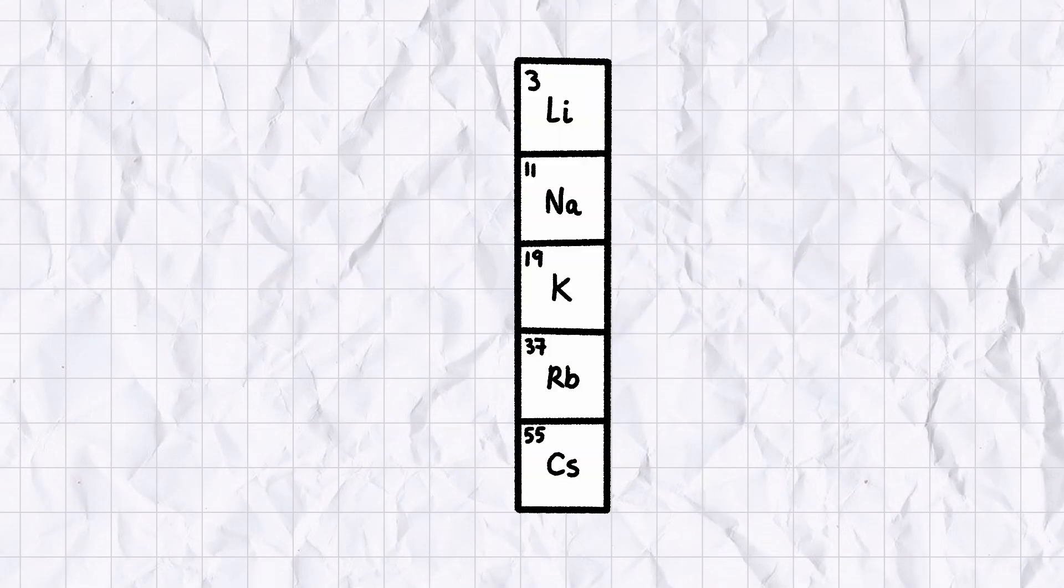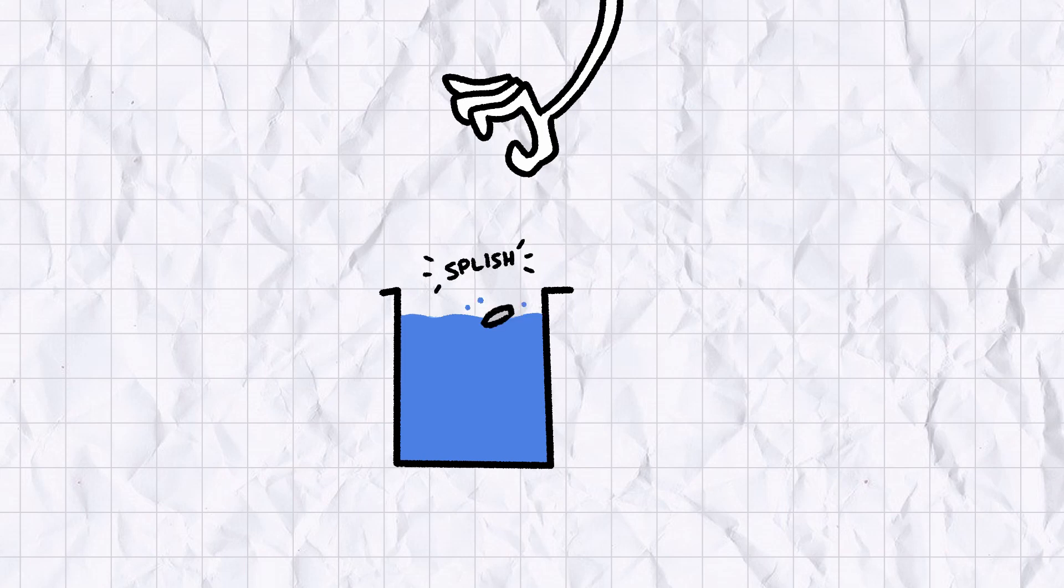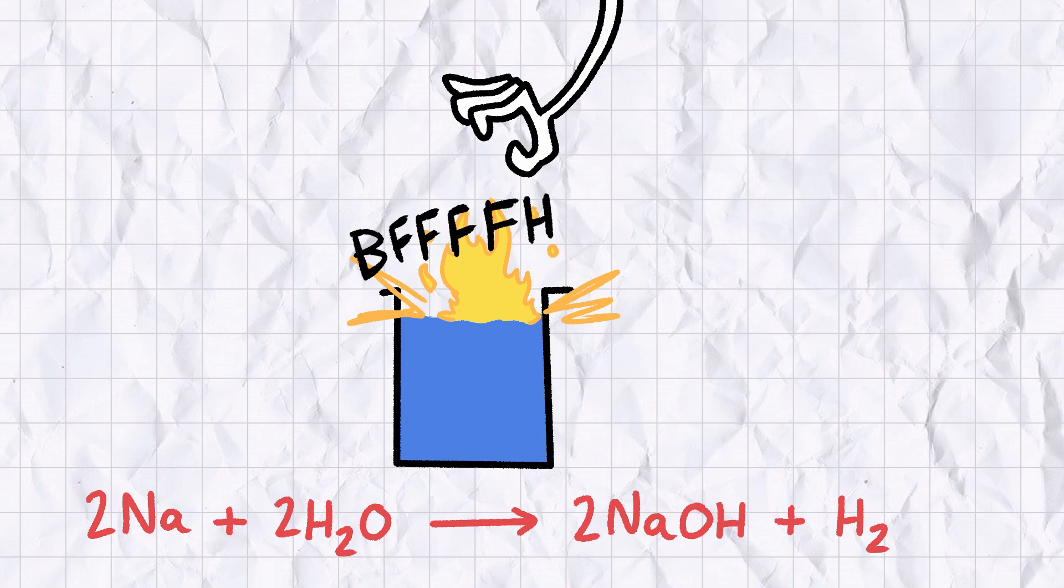Sodium is the second of the alkaline metals and similar to its brothers and sisters, it's a silvery, highly reactive solid in its pure form. If you drop a pellet of sodium metal in water, it will give off a brilliant yellow flame, producing sodium hydroxide and hydrogen gas.